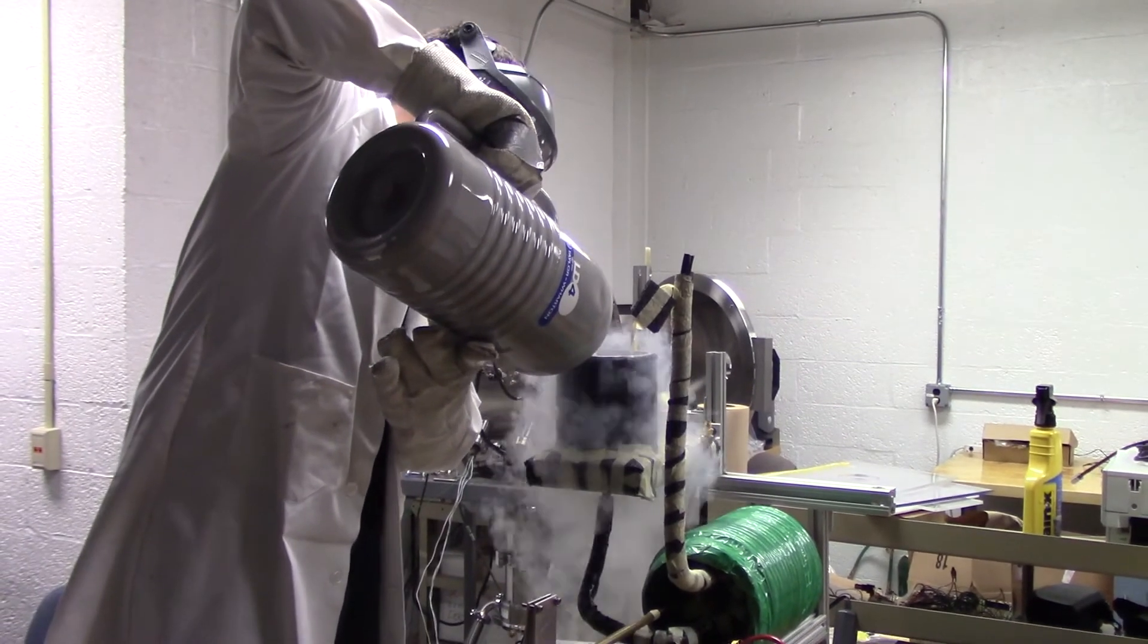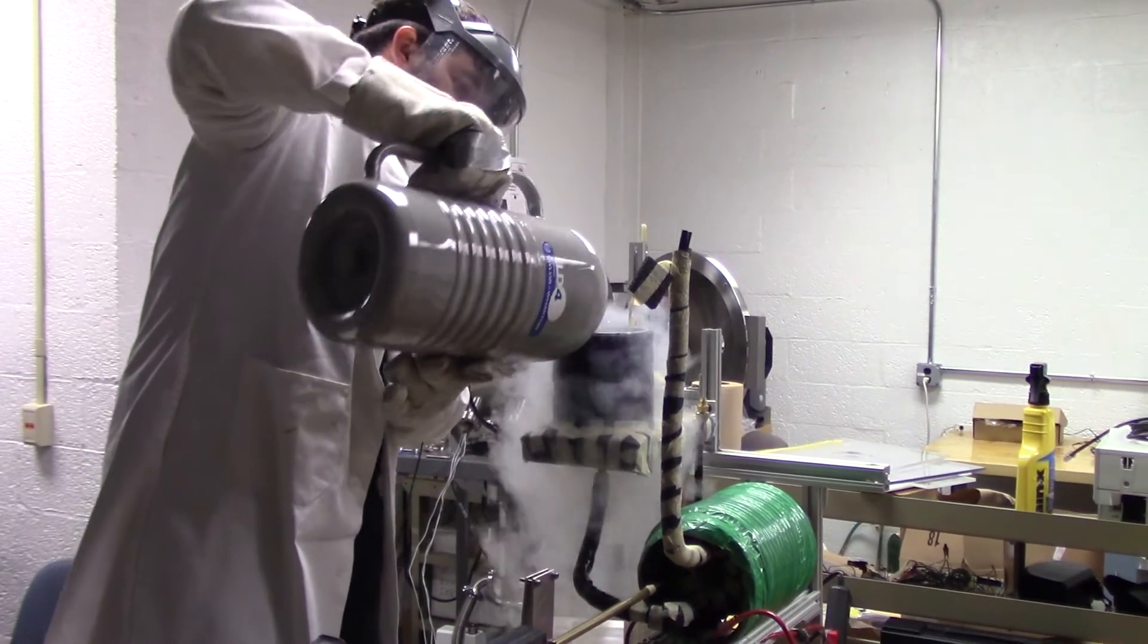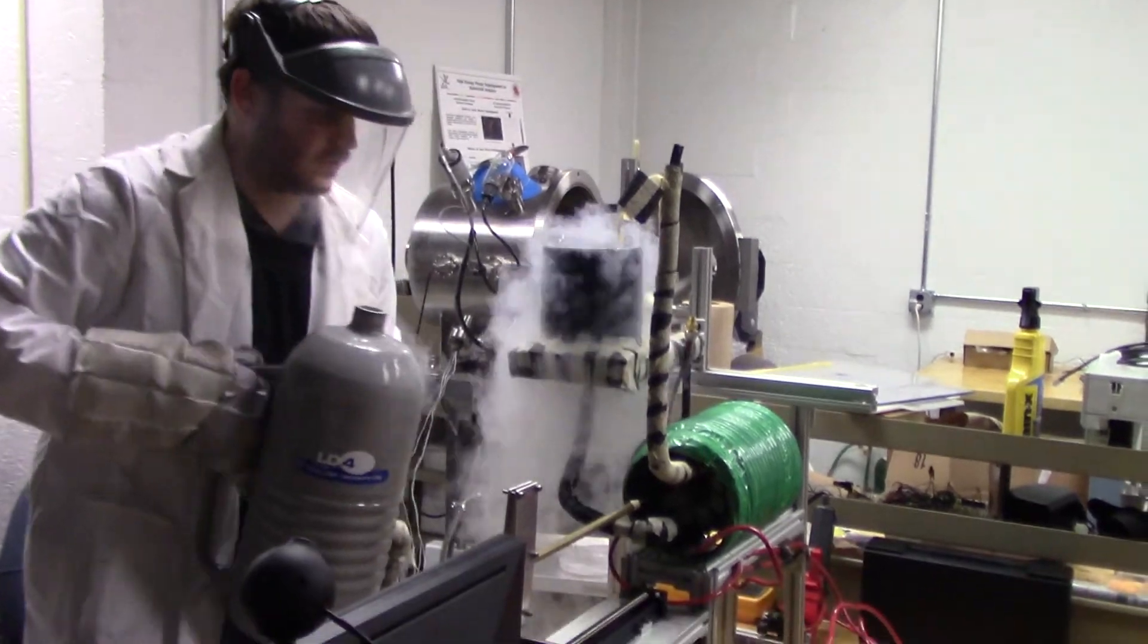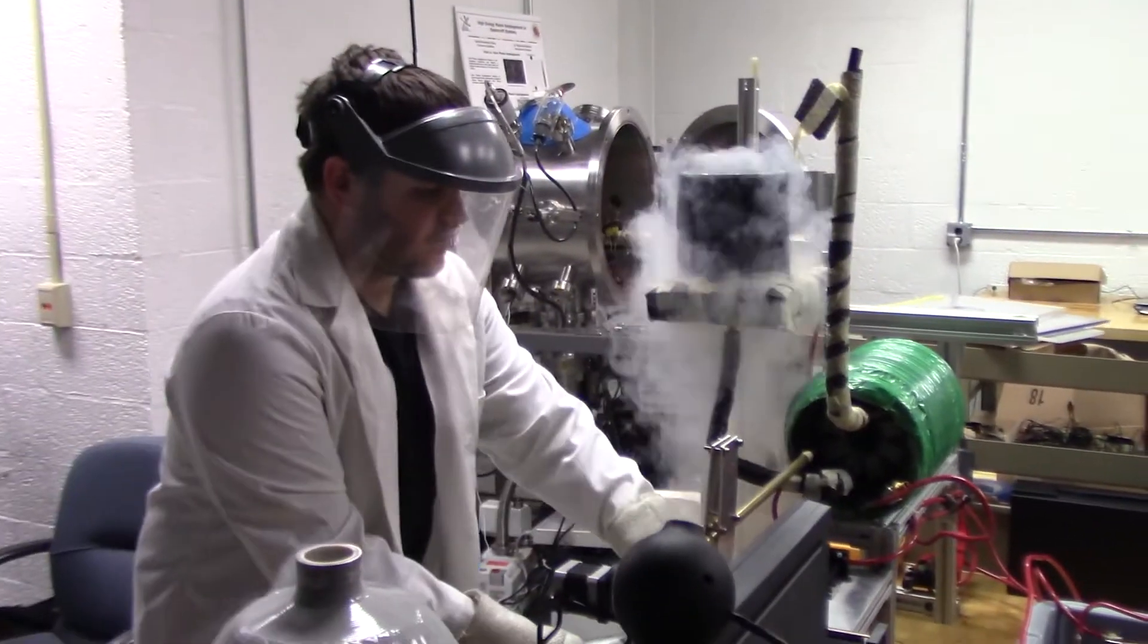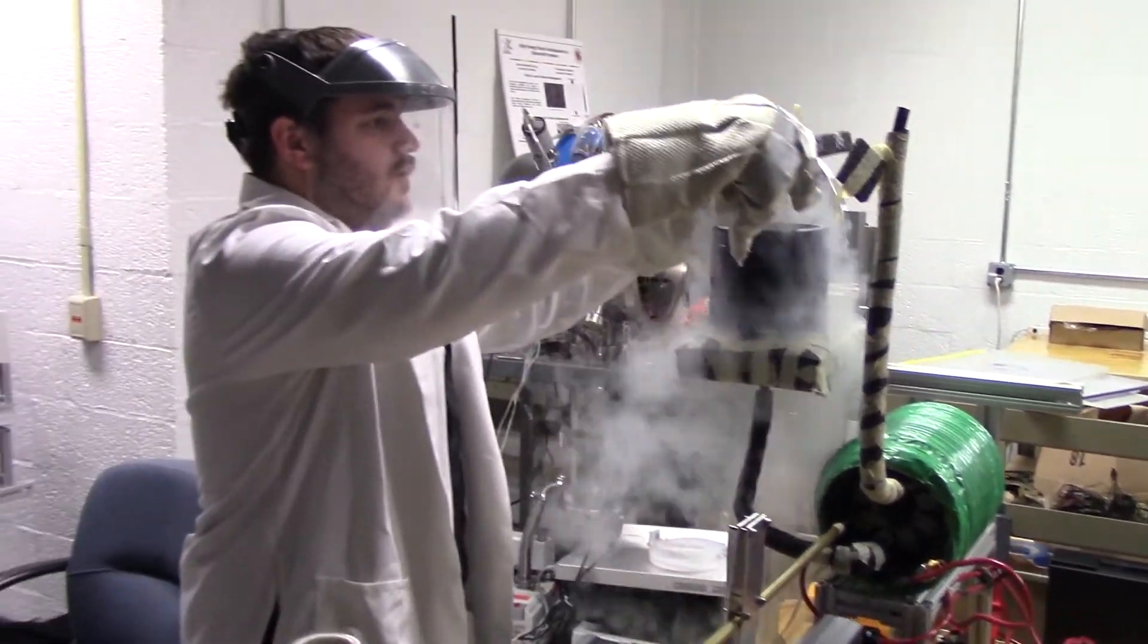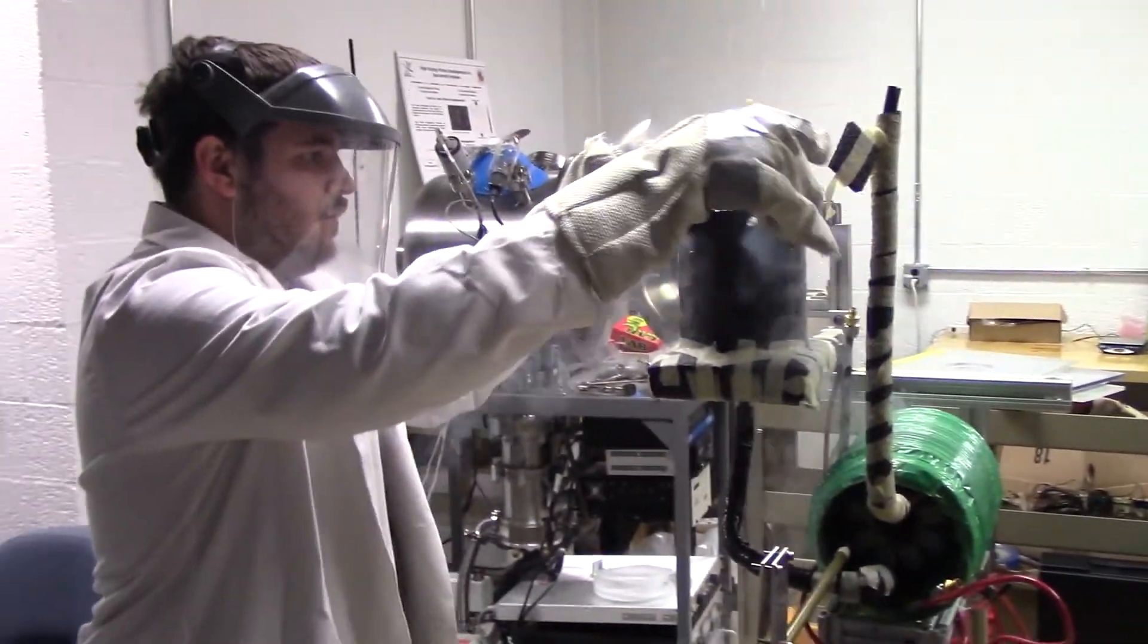What we're doing in this experiment is looking to modify the magnetic field of a permanent magnet or solenoid to desired geometry for a plasma thruster. One way that we can do this is through the Meissner effect with superconductors.